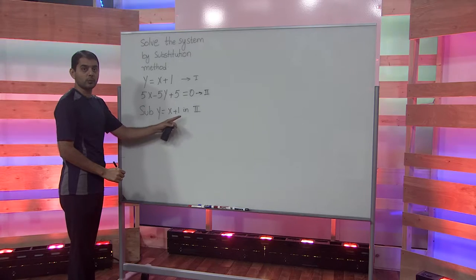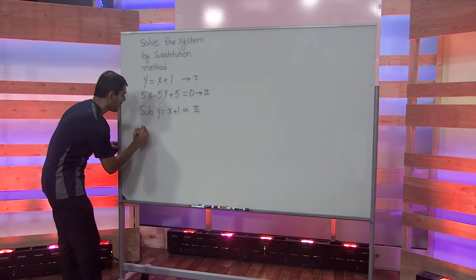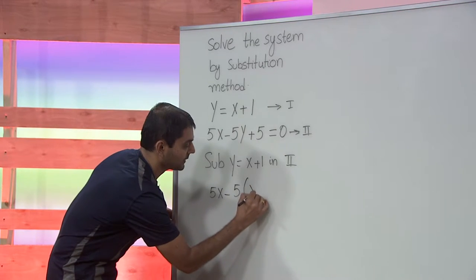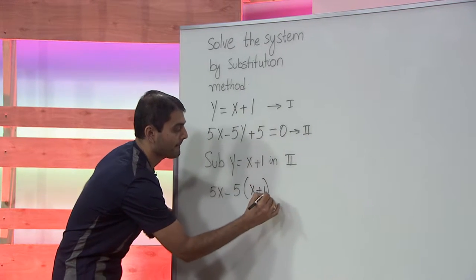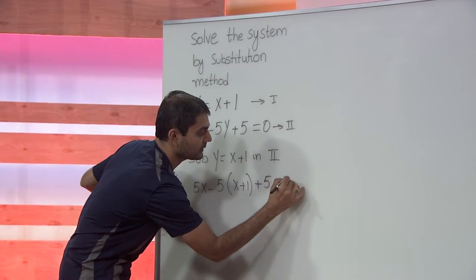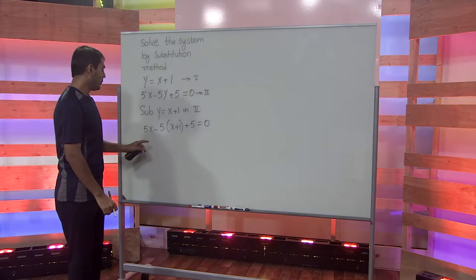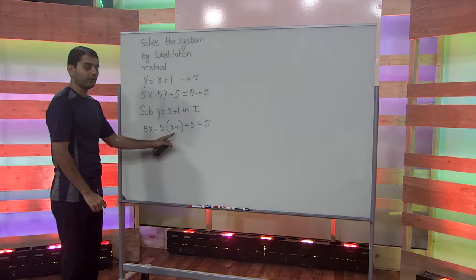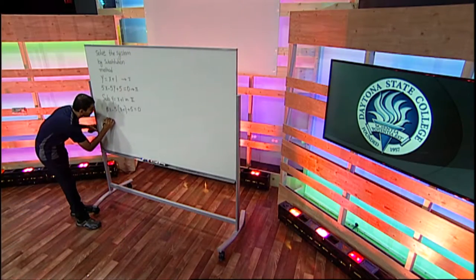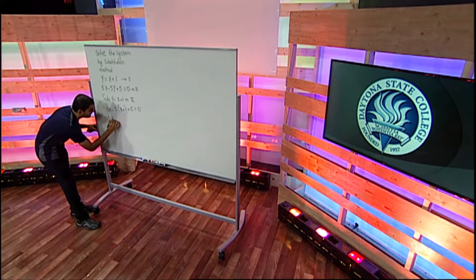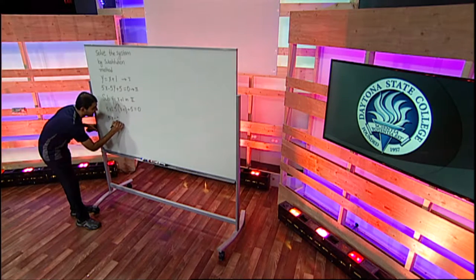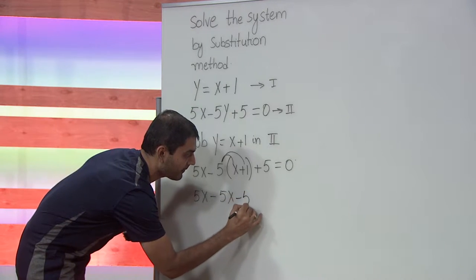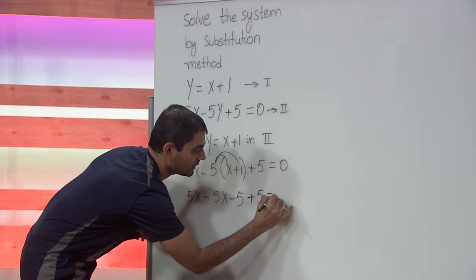Substituting y equals x plus 1 in the second equation, we get 5x minus 5 times (x plus 1) plus 5 equals 0. Now we want to clear the parentheses by distributing 5 to each of the terms inside. So we get 5x minus 5x, and distributing negative 5 to positive 1, we get negative 5, plus 5 equals 0.